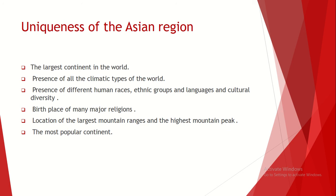The next unique feature is the location of the largest mountain ranges and the highest mountain peak. The Asian region consists of large mountain ranges. Among them, the largest mountain range in the world — the Himalayas — is located in the continent of Asia. Mount Everest, the highest peak at 8,848 meters in height, is also located in the continent of Asia.